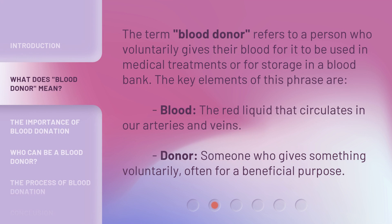The term "blood donor" refers to a person who voluntarily gives their blood for it to be used in medical treatments or for storage in a blood bank. The key elements of this phrase are: blood — the red liquid that circulates in our arteries and veins — and donor — someone who gives something voluntarily, often for a beneficial purpose.